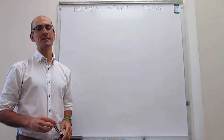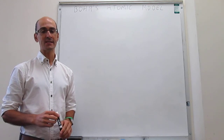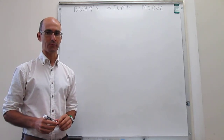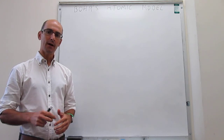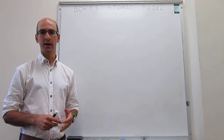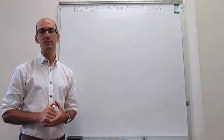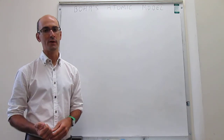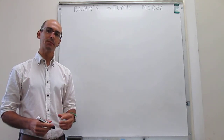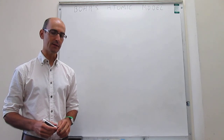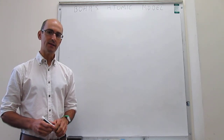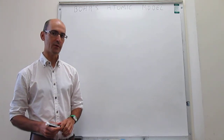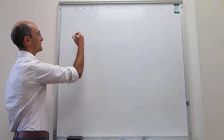In this video we discuss Niels Bohr's explanation for the hydrogen atom emission spectrum. Planck, Einstein, and de Broglie had already laid out the rudiments of quantum theory. There was one experiment that they still could not explain, and that is the emission spectrum for the hydrogen atom. The experiment is as follows.